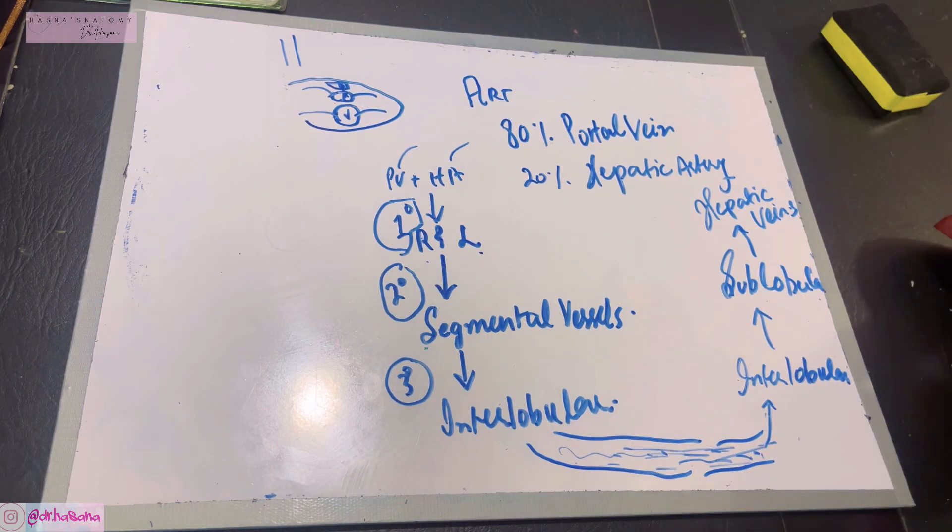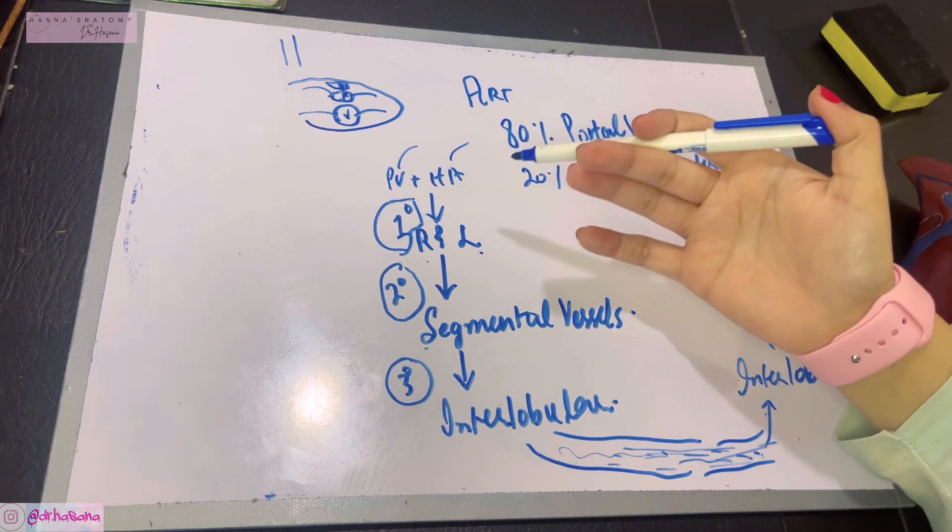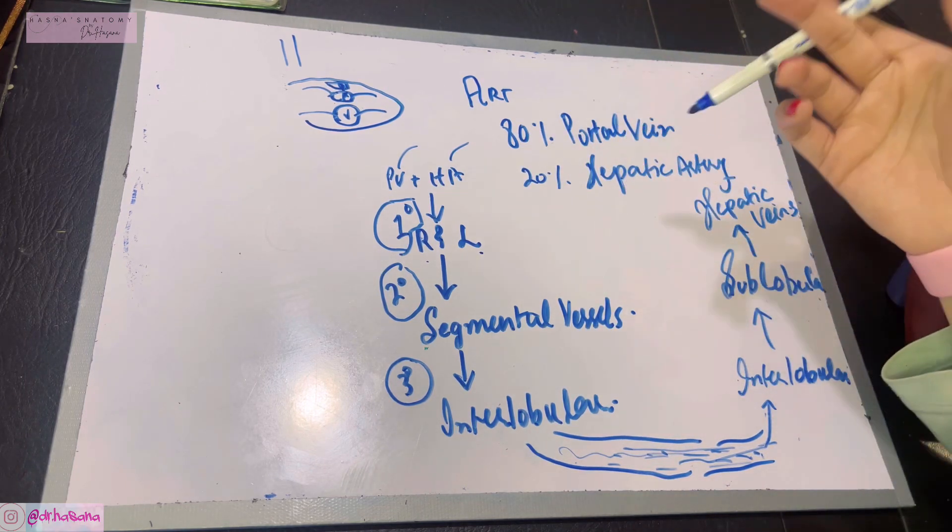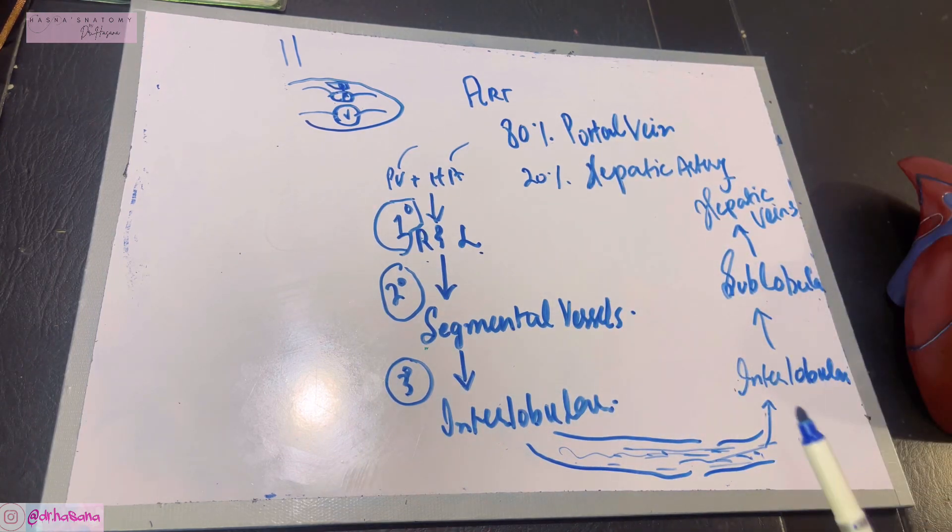The nerve supply of the liver is from sympathetic and parasympathetic fibers. The parasympathetic fibers come from the vagus nerve.